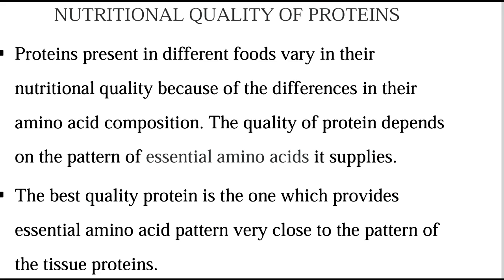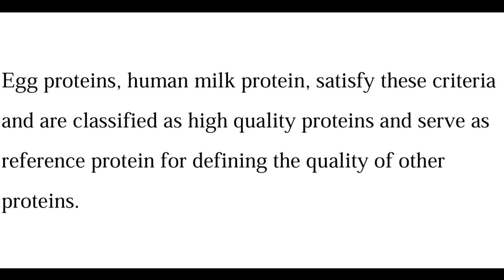The nutritional quality of proteins depends upon its amino acid composition, specifically essential amino acids. Any protein which contains all the essential amino acids in required amounts is a complete protein. Any protein that lacks one essential amino acid becomes incomplete, and any protein which lacks more than one essential amino acid is called a poor protein. Examples of complete proteins in the diet are egg albumin and casein of milk, because they contain all the essential amino acids.